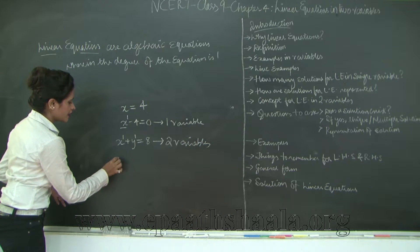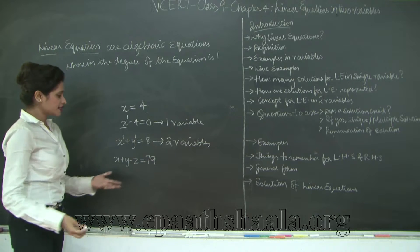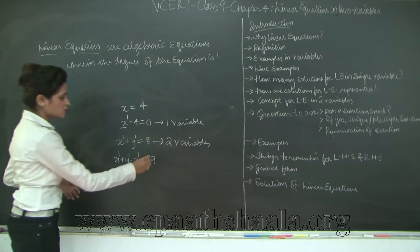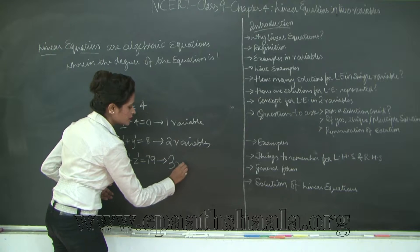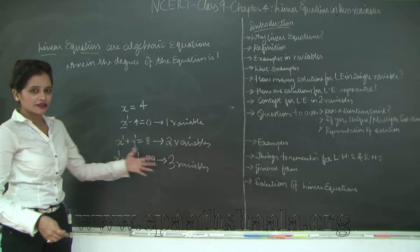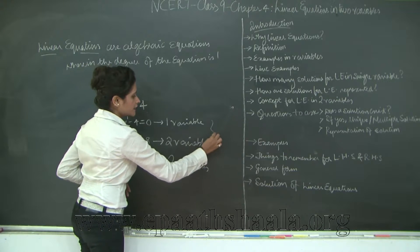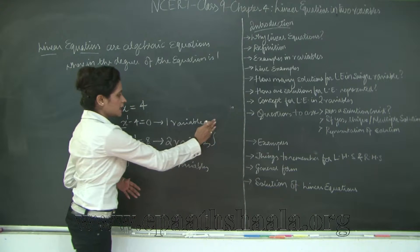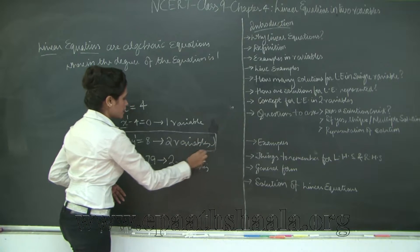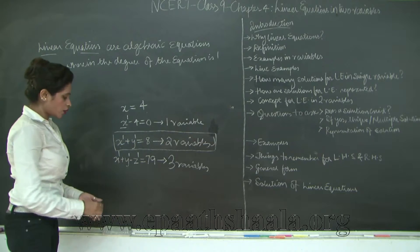Similarly you can have x + y − z = 79. Again we have 3 variables and the degree of this equation is 1 — this is a linear equation in 3 variables. You can have linear equations in many variables, but in our textbooks we are going to cover only linear equations in 2 variables. Linear equations in 1 variable are already done in your 8th grade, so we will concentrate on 2 variables: x and y.